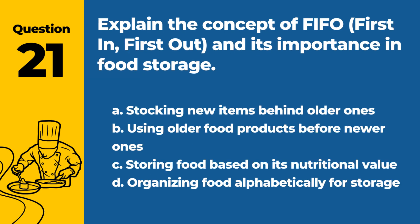Question 21. Explain the concept of FIFO — first in, first out — and its importance in food storage. A. Stocking new items behind older ones. B. Using older food products before newer ones. C. Storing food based on its nutritional value. D. Organizing food alphabetically for storage. Answer: B. Using older food products before newer ones. FIFO, first in, first out, is a method where older food products are used before newer ones to ensure food freshness and minimize waste.